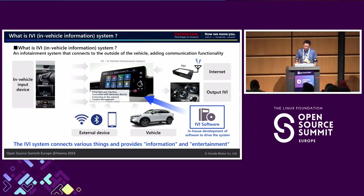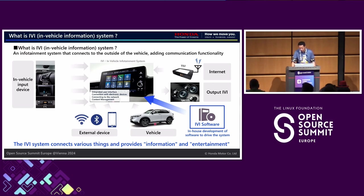First is the IVI — in-vehicle infotainment systems. This hardware is the IVI system. Please look at the many arrows. This means many input devices, connectivity devices, vehicle data CAN, and other vehicle data connections. And the output includes many speakers.